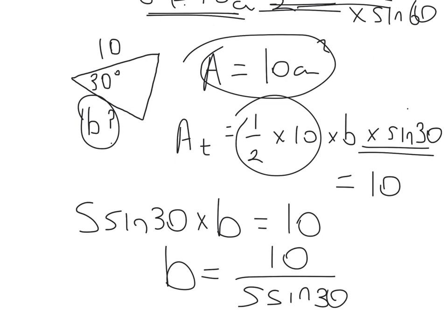So in essence, what we're doing here is changing the subject of the formula. So we know that the area of the triangle is 10. And it's a half times one of the sides 10 times the side that we don't know, b, times sine of the angle, which is 30 degrees, which will give me 10.